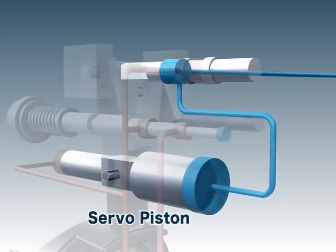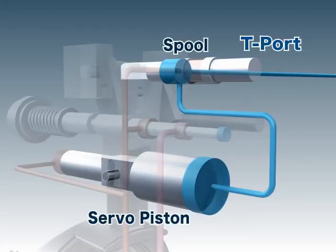As a result, the pressure within the larger side of the servo piston is released through the tank port, which then moves the servo piston.